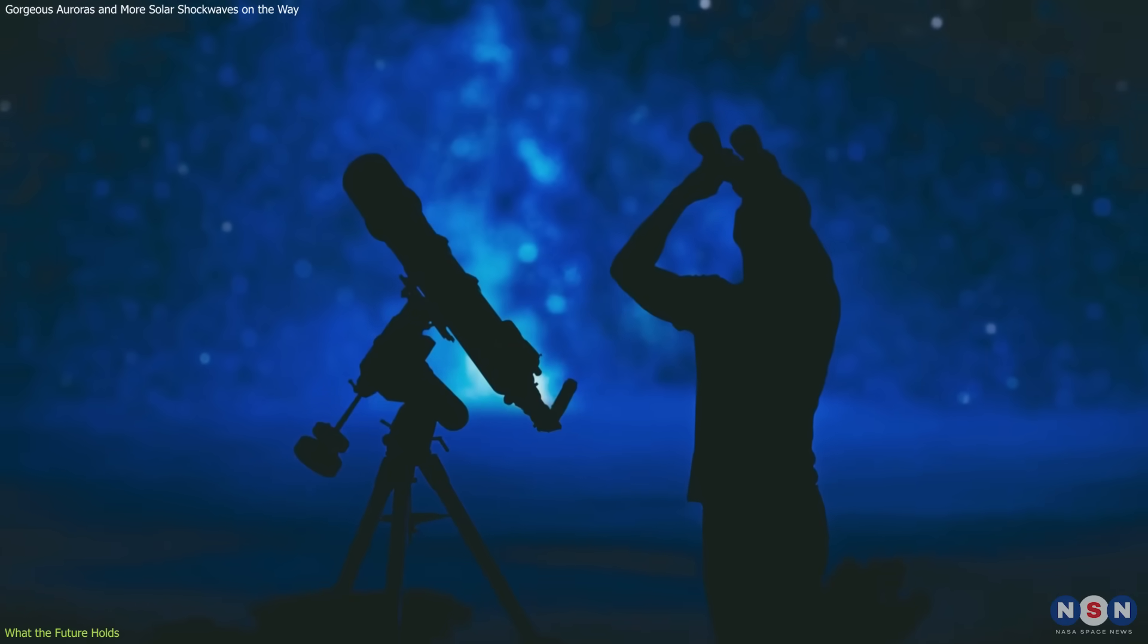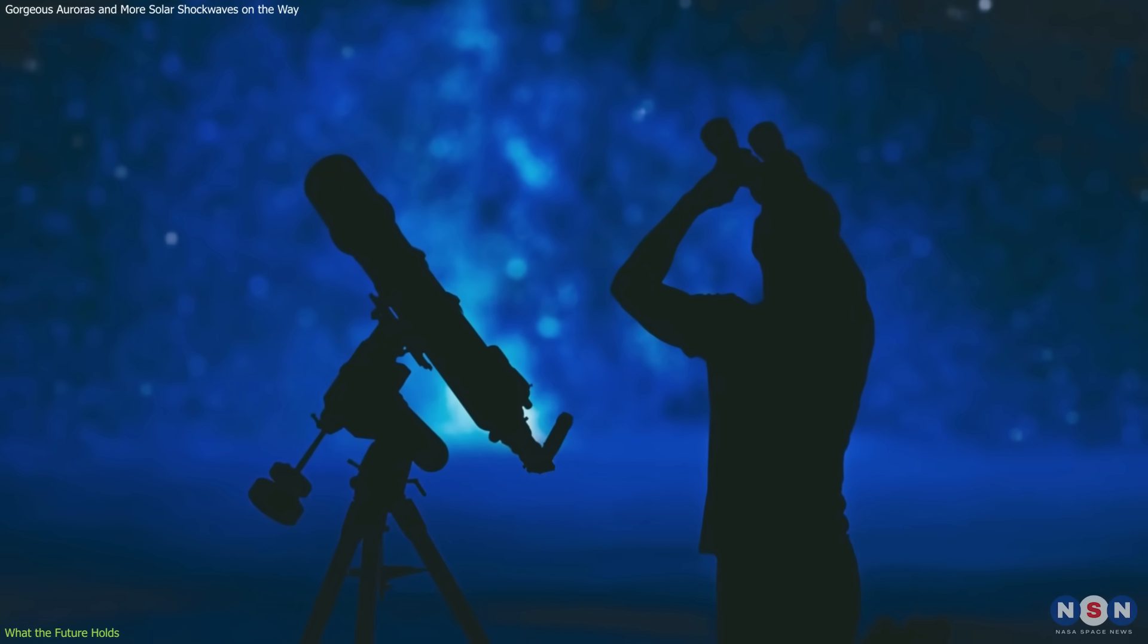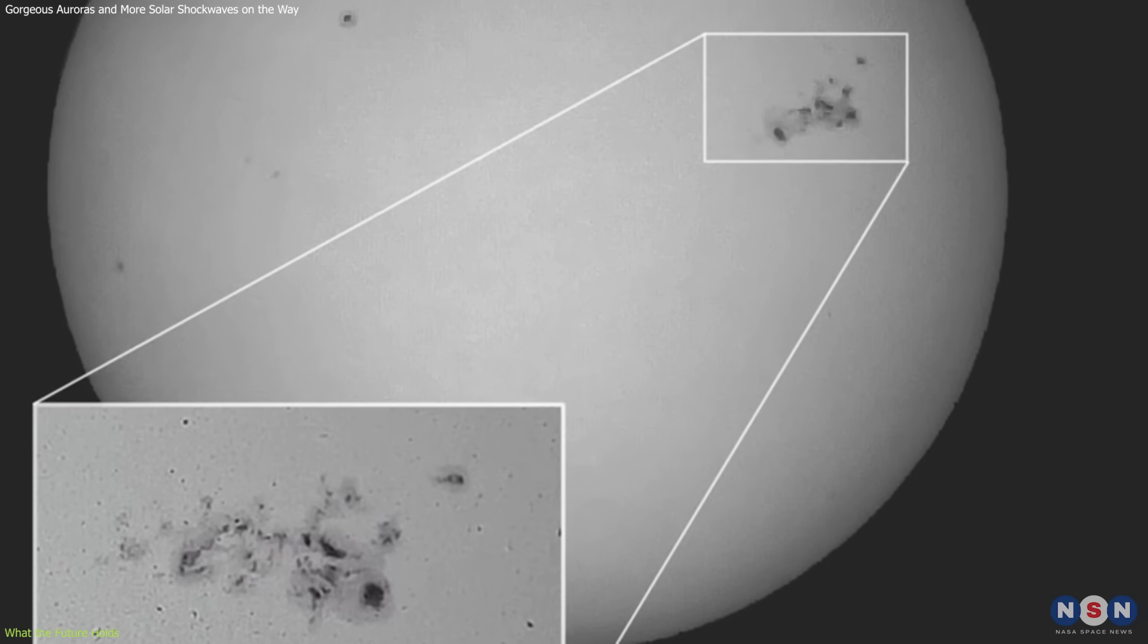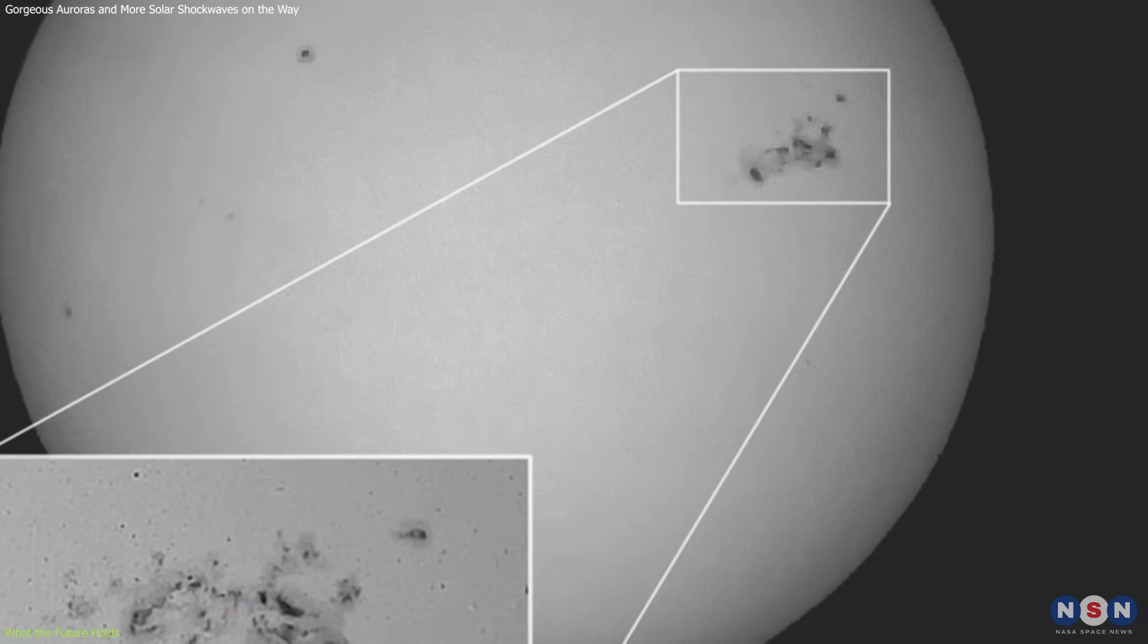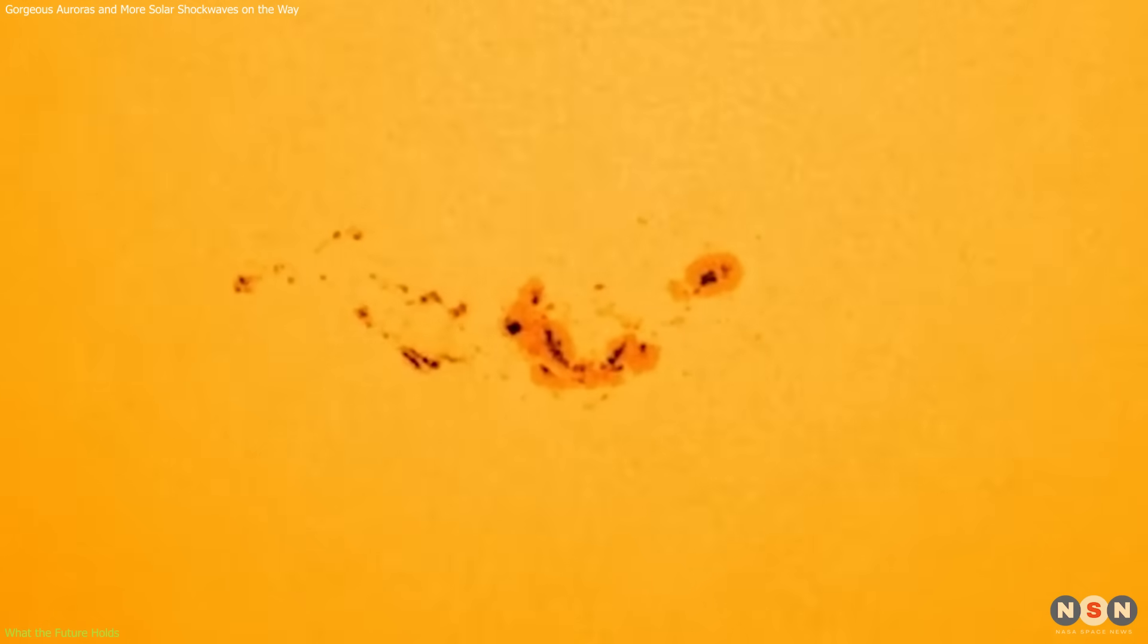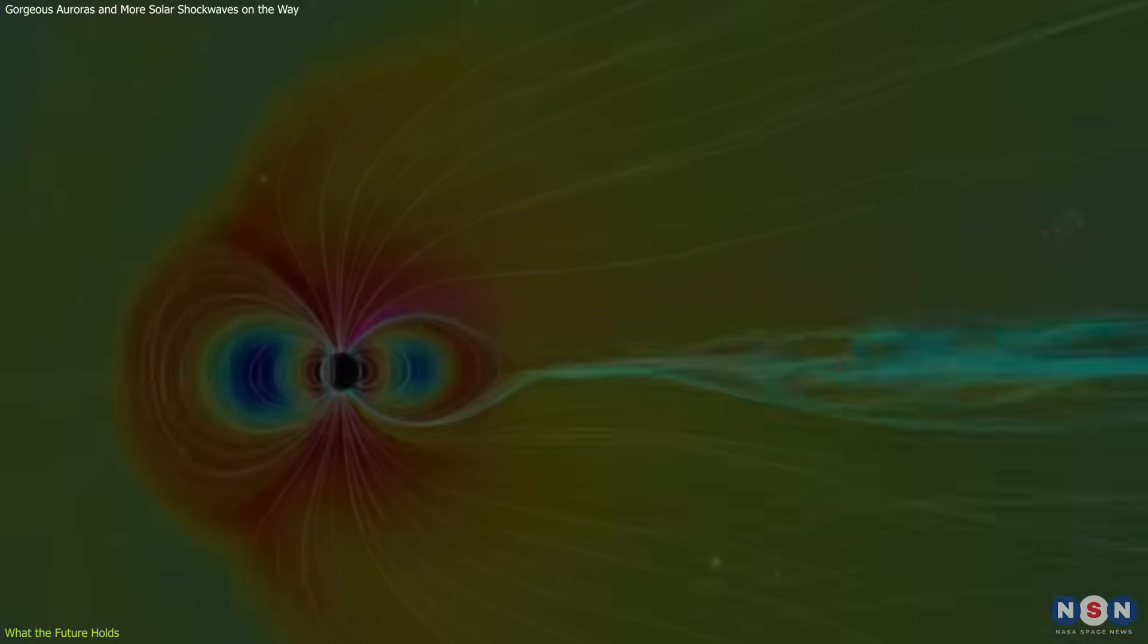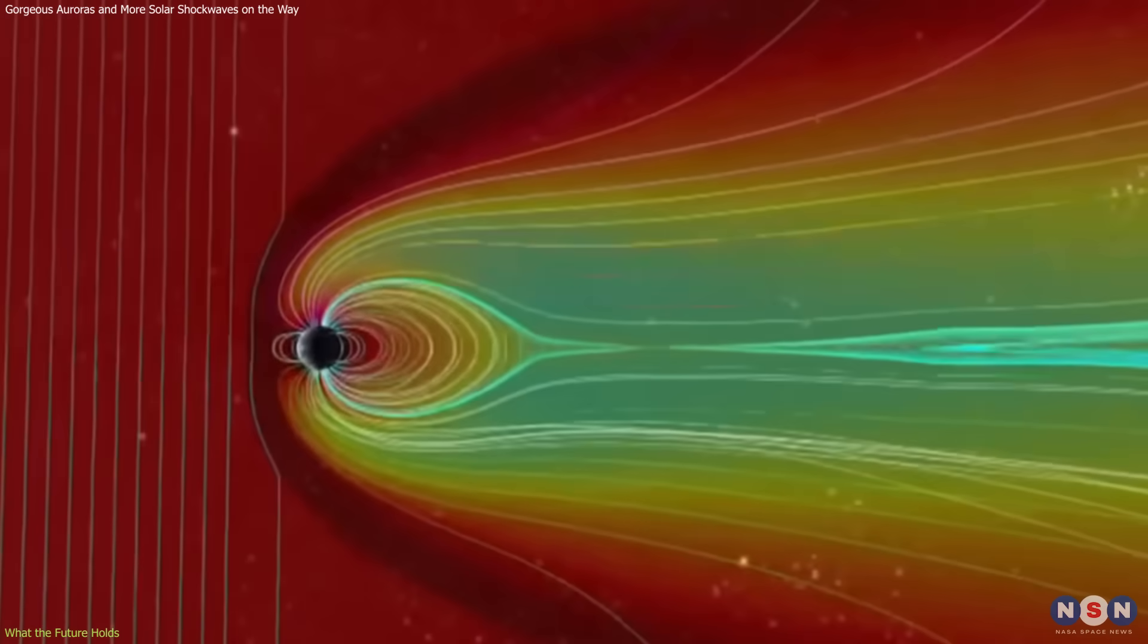Enthusiasts and sky watchers worldwide are eagerly observing the skies, spurred by recent stunning images captured by astrophotographers like Franco Fantasia and Giuseppe Conzo from Rome. These images not only showcase the sunspot's grandeur, but also help the public and scientific community prepare for potential geomagnetic disturbances.